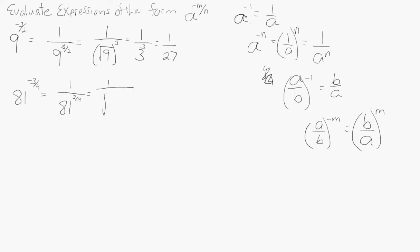Radical sign, 81. Index would be 4, and we'll figure out what that is. We're going to cube it. 1 in the numerator. Fourth root of 81 is 3, cube that, 1 over 27.